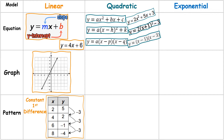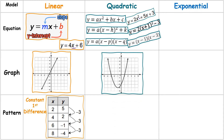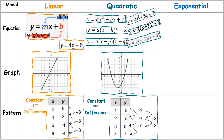With quadratics you have a squared term; for linear functions the highest degree is one, and for quadratic the highest degree is two. The graph of a quadratic is a U-shaped curve called a parabola. To identify a quadratic from a table, you look for a constant second difference.